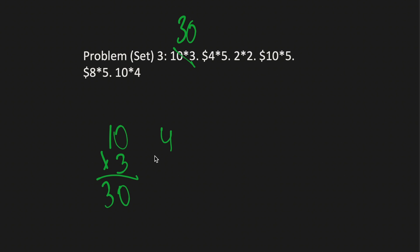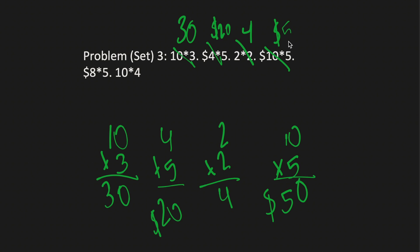$4 times 5. We know the gist. We have to multiply and add the dollar sign at the end. So we know that it's going to end with a 0. 1 times 5 is... So it would be $50.